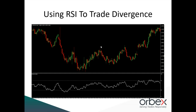Divergence is a fantastic way to use the indicator to highlight trading opportunities. Whereas fading the RSI is a basic method looking for extreme levels, identifying divergence is where we step up our trading and think about price movement and indicator readings in a more advanced, strategic way. This is where we can gain an advantage over other traders, reading between the lines to identify specific dynamics that can yield certain outcomes.